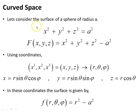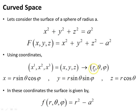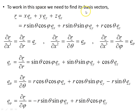In curved space, let's consider the surface of a sphere of radius a. The equation is x² + y² + z² = a², which we write as the scalar function f = x² + y² + z² − a² = 0. Using coordinates x1, x2, x3 as the Cartesian coordinates x, y, z, we'll transform to spherical polar coordinates r, θ, φ using the standard transformation equations. In these coordinates, the surface is given by the scalar function f(r, θ, φ) = r² − a². To work in this space we need the basis vectors, so here's the position vector in Cartesian space, transformed into spherical polar coordinates.